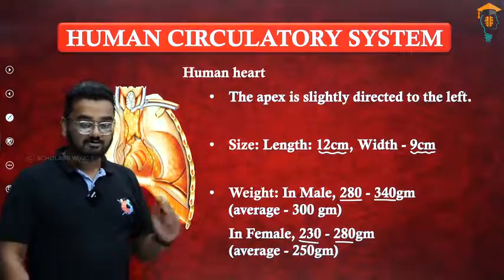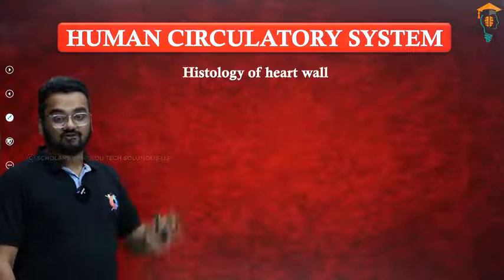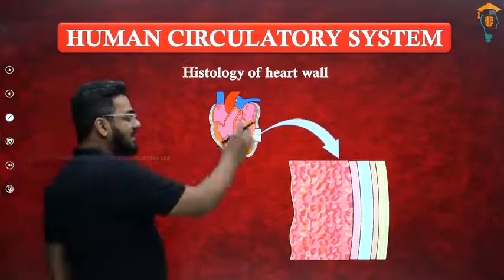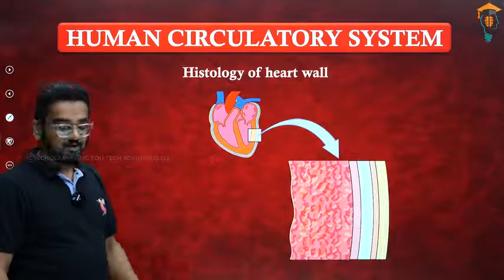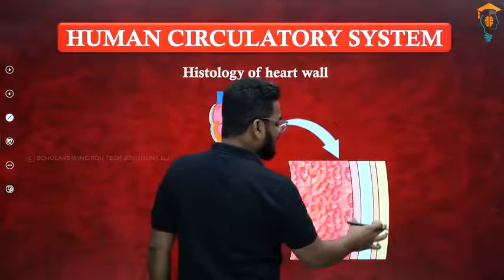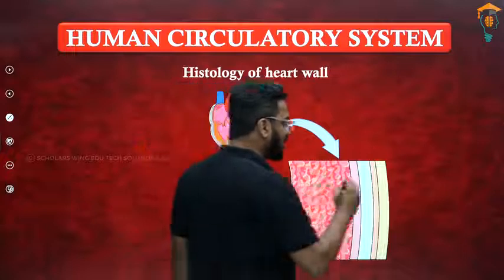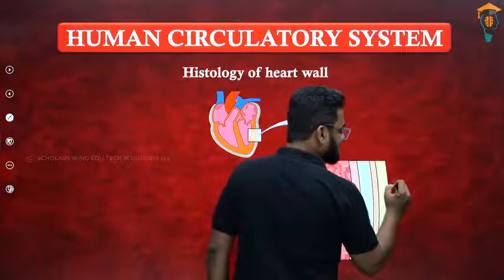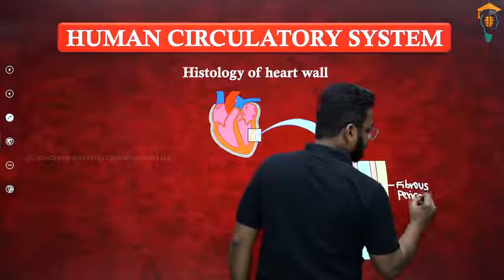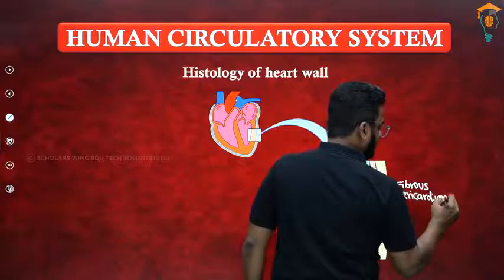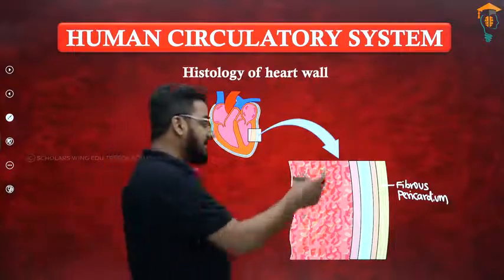Now we will see the histology of the heart wall. When you take the heart and enlarge the structure, it is made up of different layers. The heart is covered by a layer called the pericardium, which has different regions. The outermost region is referred to as the fibrous pericardium, which is made up of thick connective tissue and protects the heart.